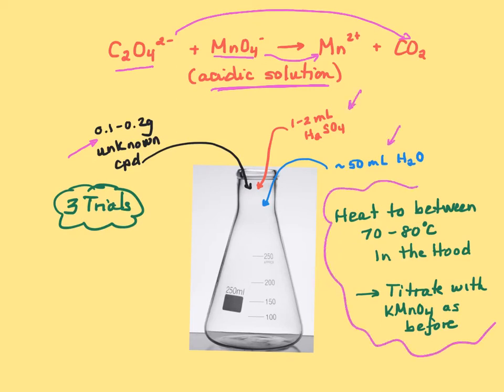So we're going to, in the hood, in the hood, because we're heating sulfuric acid, we're going to heat it between 70 and 80 degrees. Try not to go over 80 degrees. Once it's, so you put a thermometer in there, we've got a thermometer. Once it's between 70, 80, you can take it out of the hood, and you'll titrate it with the KMnO4, just as you did before. You want to do it kind of quickly, but you don't have to rush or anything. It will stay warm enough. So the only difference really here is you're using your unknown, and you're heating it up before you react it.